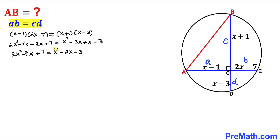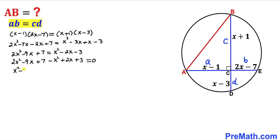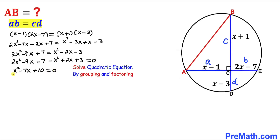Now let's move everything to the left-hand side and combine once again. That gives us x squared minus 7x plus 10 equals 0. We can see that this is a quadratic equation and we are going to solve it by grouping and factoring.